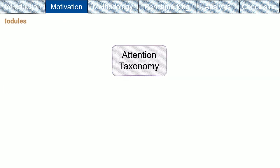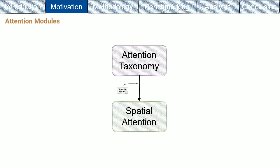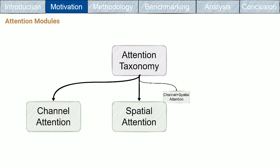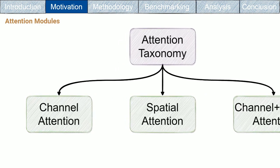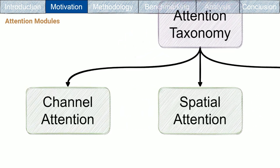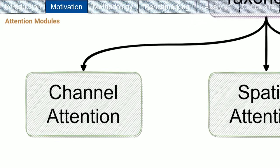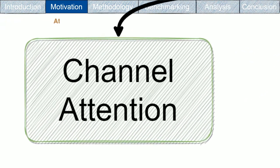Attention modules can be classified into three types: spatial attention modules, channel attention modules, and spatial and channel attention modules. Channel-wise acts as a gating mechanism that focuses on enhancing the representational power of the network by modeling channel-wise relationships.